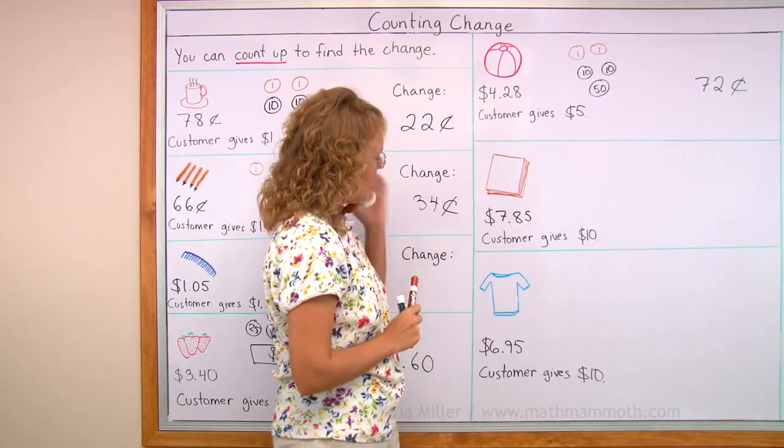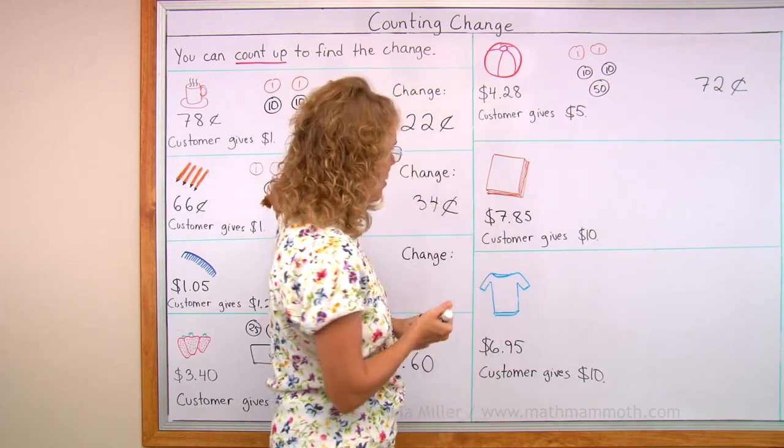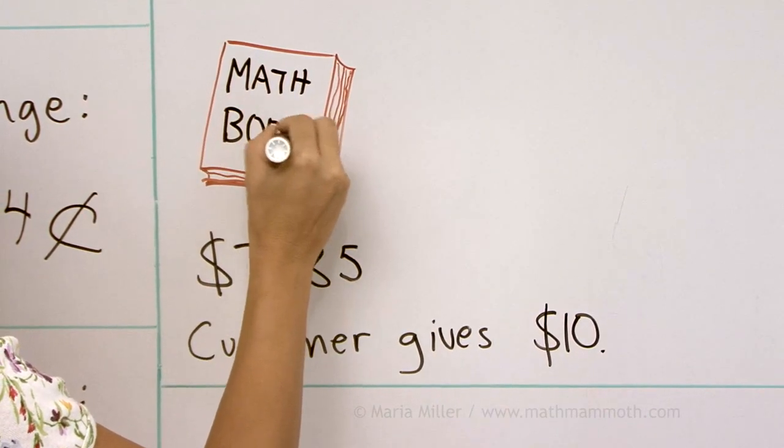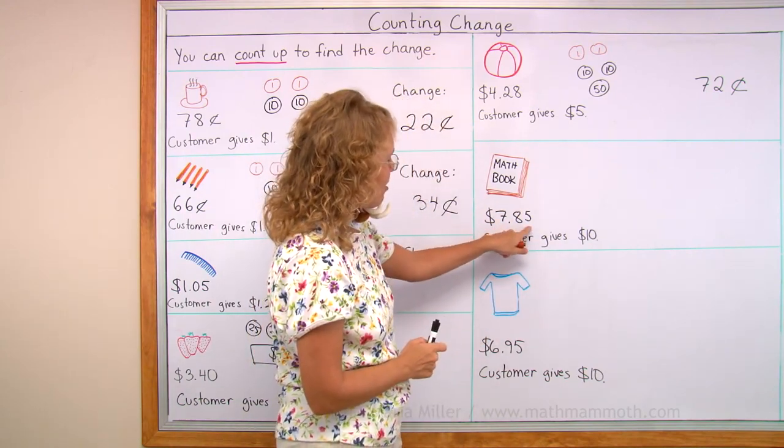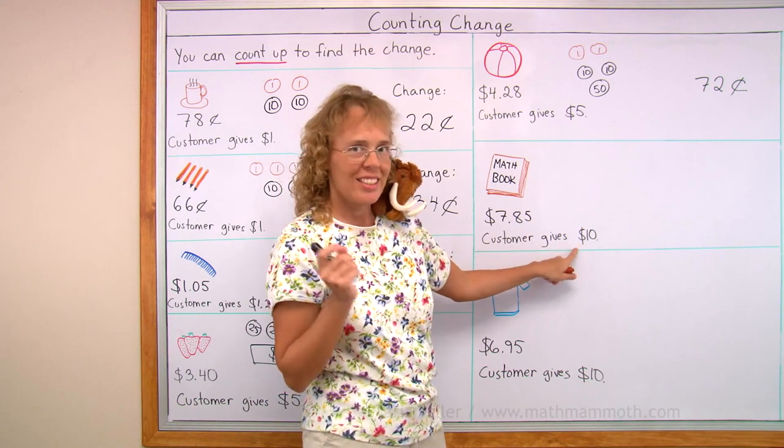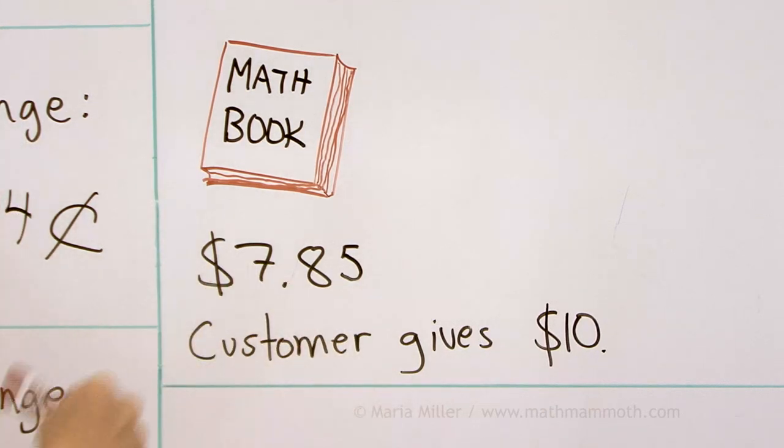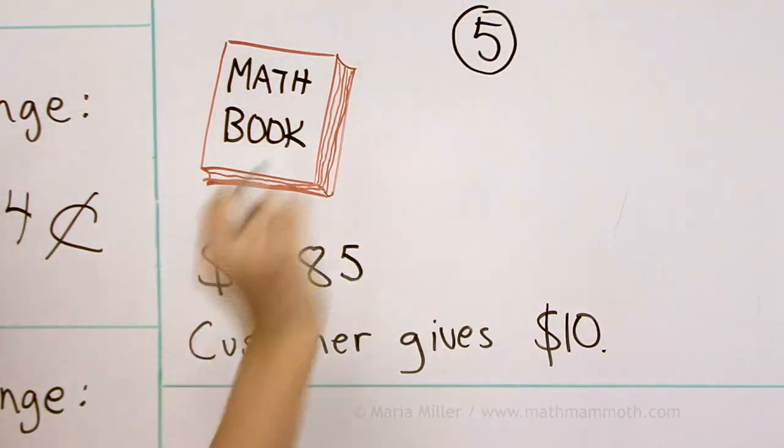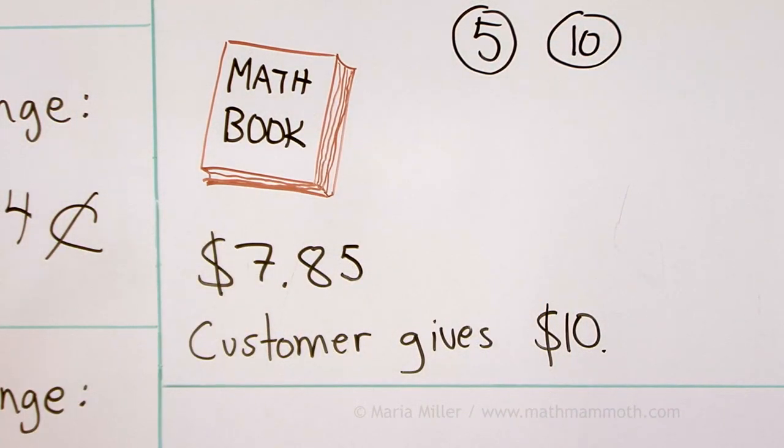A book. $7.85. Matthew is telling me to make it a math book. Yes, math book. And the customer will be Matthew. Matthew buys it for $7.85. The customer gives $10. Let's work it out together again. From $0.85 we go to $0.90 first. Add $0.05 to that. We're at $0.90. Then add $0.10. And we are at the next whole dollar. That's $8.